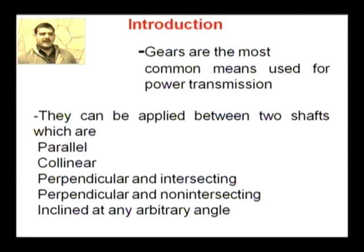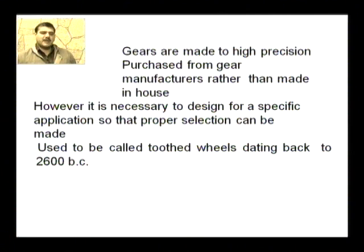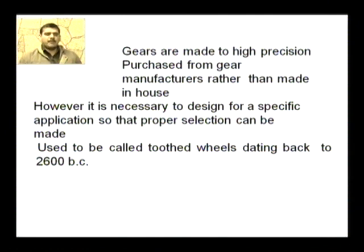The position of shafts determines what type of gear we will use. Gears are made to high precision and are purchased from gear manufacturers rather than made in-house. However, it is necessary to design for a specific application so that proper selection can be made. Gears used to be called tooth wheels, dating back to 2600 BC. The use of gears depends on our requirements, and the gear material at that time was slightly different.